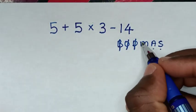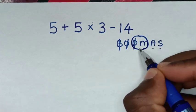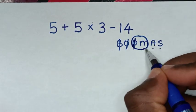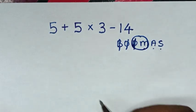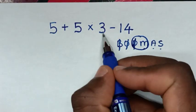Then we'll start to deal with the group of division and multiplication, but we don't have division, so we'll deal with multiplication only. In here we have multiplication of 5 times 3, which is 15.